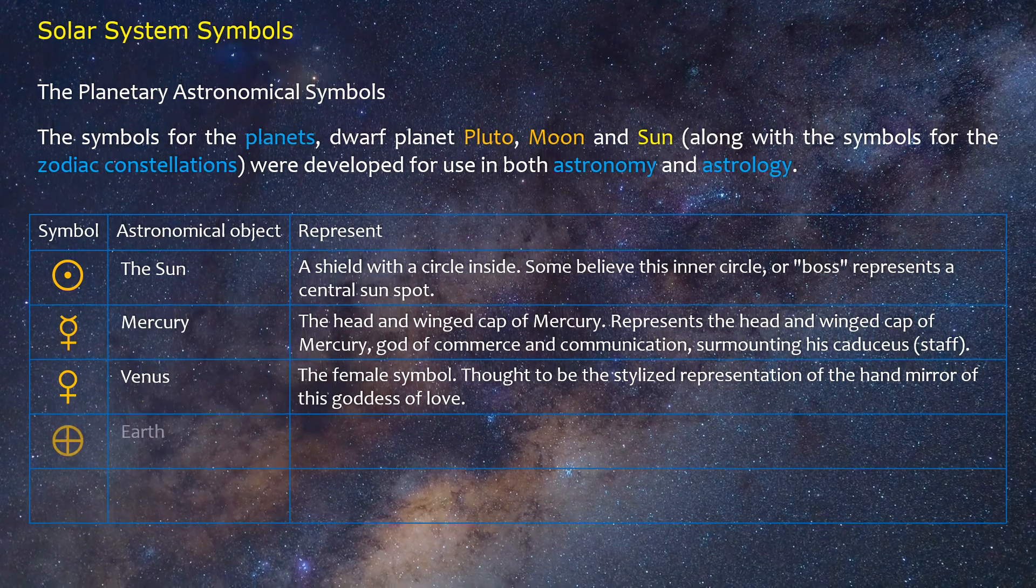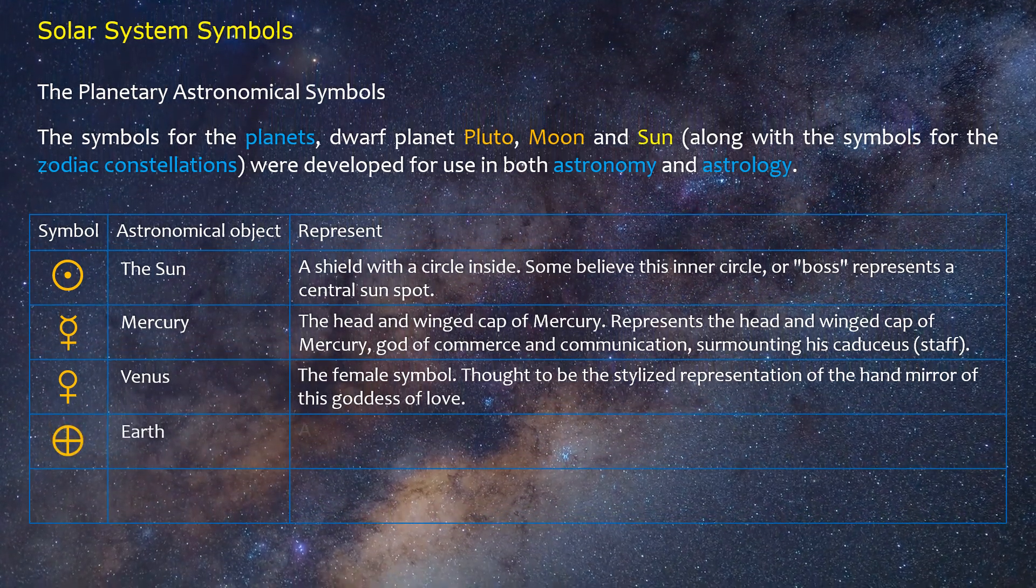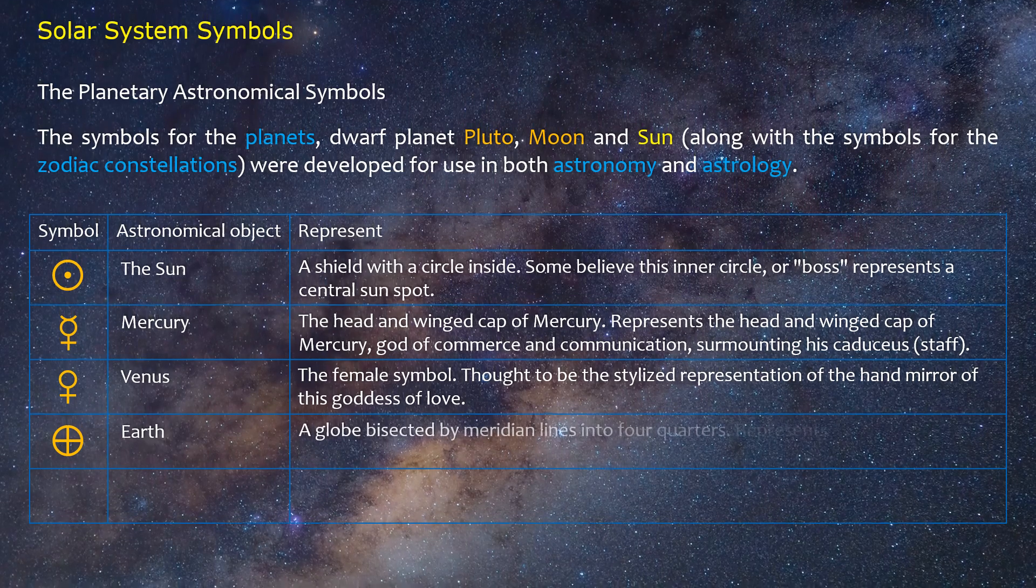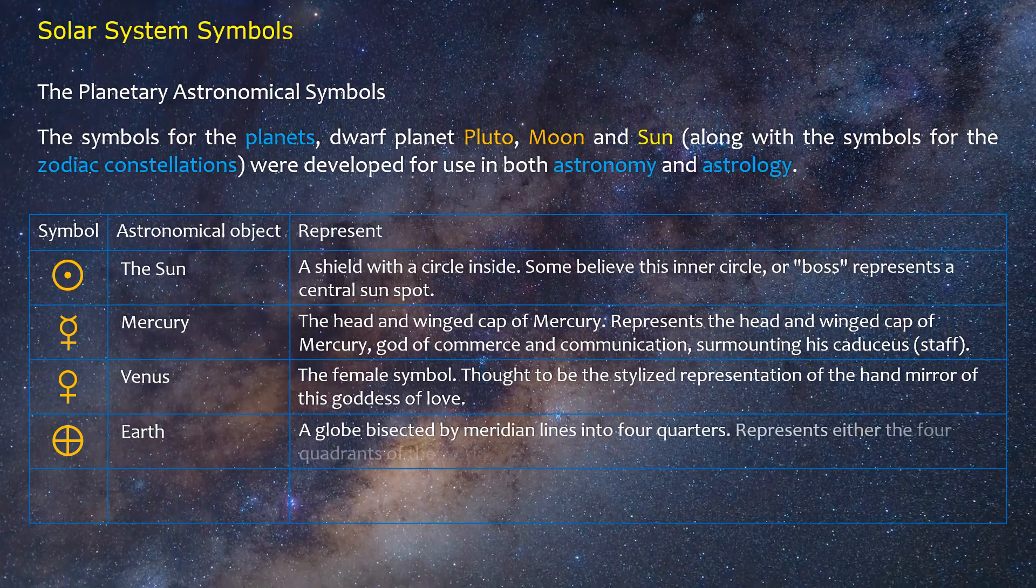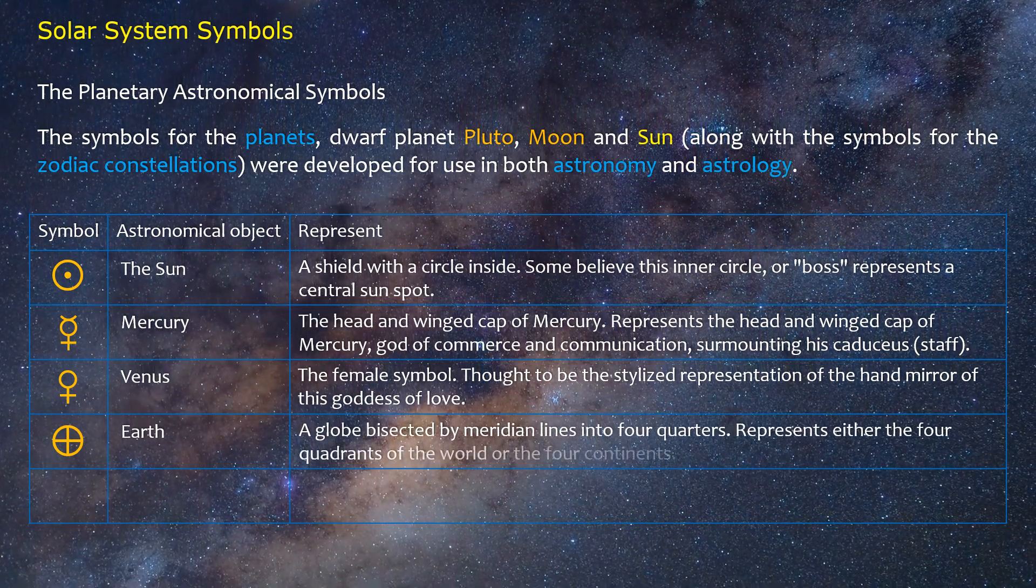Earth: A globe bisected by meridian lines into four quarters. Represents either the four quadrants of the world or the four continents.